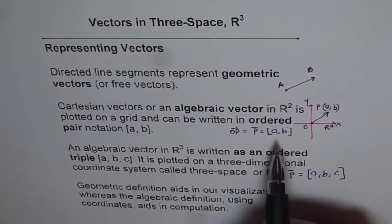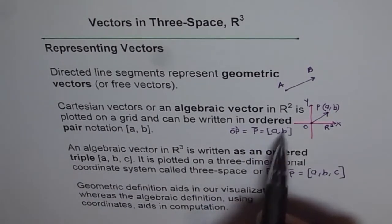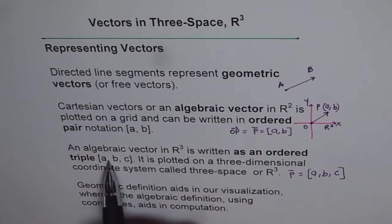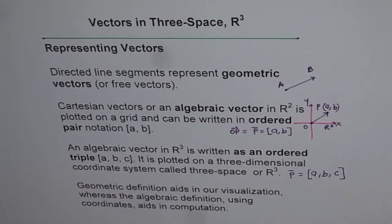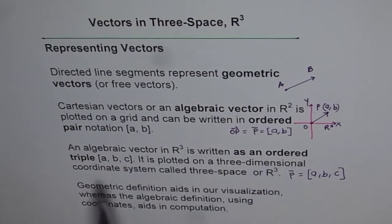This was an ordered pair—two. An ordered triple—three. They represent the coordinate points on the three axes. An algebraic vector in R³ is written as an ordered triple [a, b, c]. It is plotted on a three-dimensional coordinate system called three-space or R³.